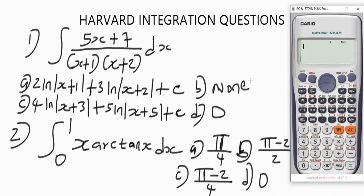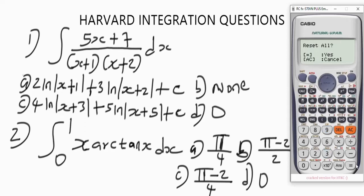This is the Casio fx calculator. The very first thing you have to do, as I've always said in my previous videos, is to reset the calculator. The essence of resetting it is to put it in default mode, to remove whatever previous values you might have stored. To reset it, press Shift then button 9, then press option 3, then press equals, then the AC key.